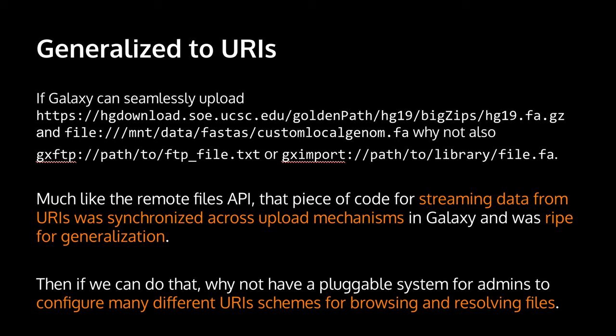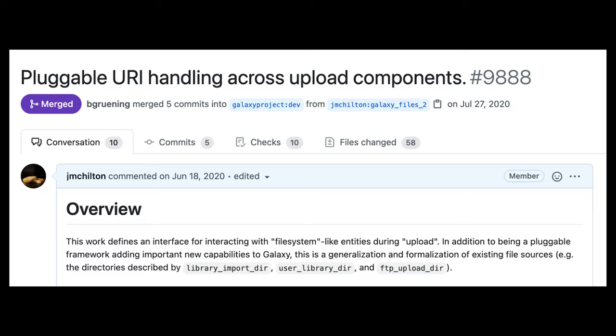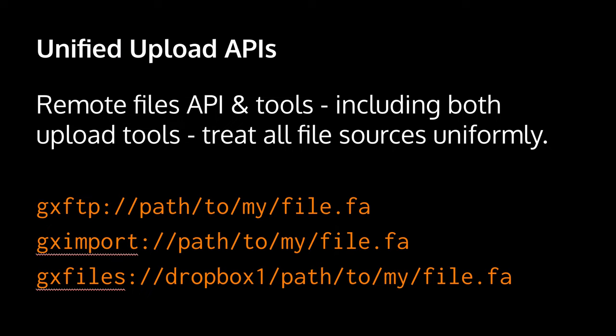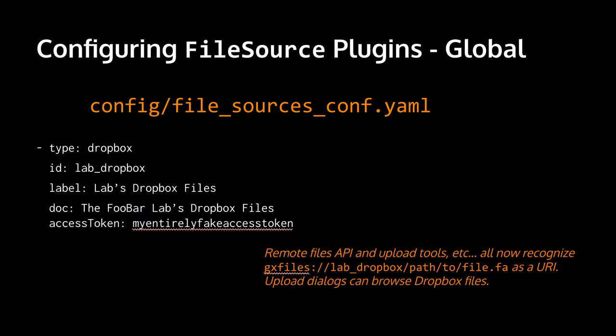What we did is add a pluggable system so that admins configure different URI schemes for browsing and resolving files. This was PR 988. After this was merged, both the remote files API and tools — including the upload tool — could treat these URIs uniformly. So GX FTP, GX imports, or even custom plugins could all be treated as simple URIs and uploaded and browsed the same way in the API.